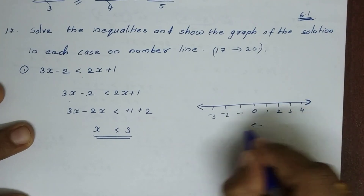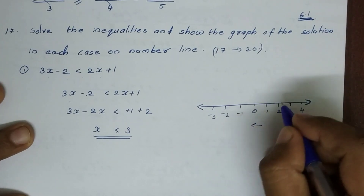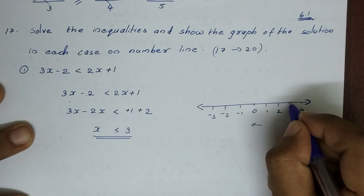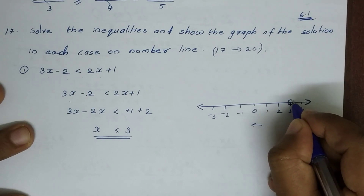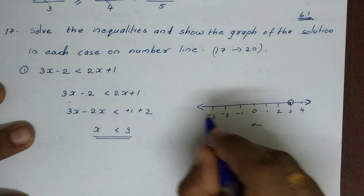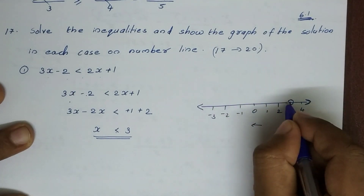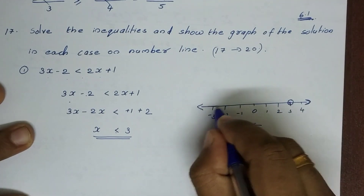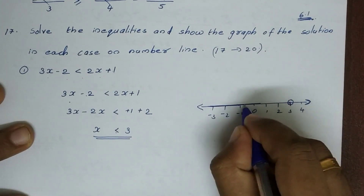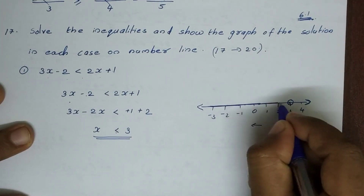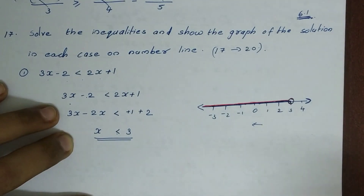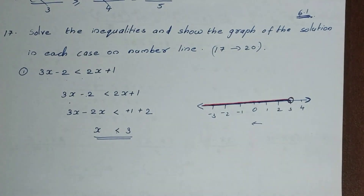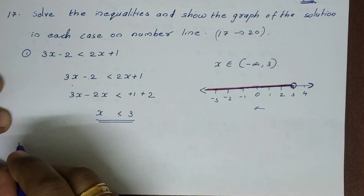Since x is less than 3, we shade the left side of 3 on the number line. The shaded region will become darkened to the left. So this is the graph for problem 17. Now we go to the next question.